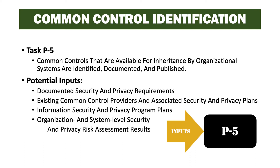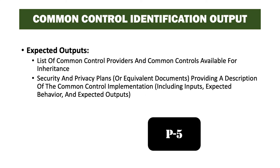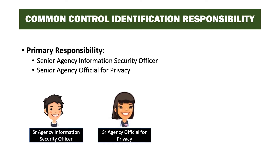Some of the inputs for this task have been conducted in the earlier tasks of the PREPARE step, but can also be gained from other sources. Expected outputs from this task are a list of common control providers and the common controls that are available for inheritance, as well as security and privacy plans providing a description of the common control implementation. The primary responsibility for this task belongs to the senior information security officer, often referred to as the chief information security officer or the chief security officer.